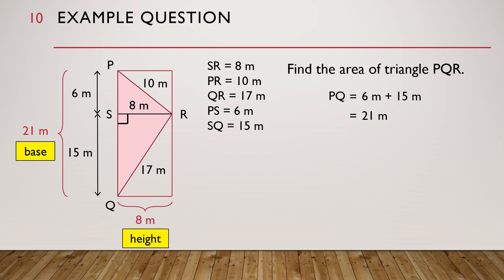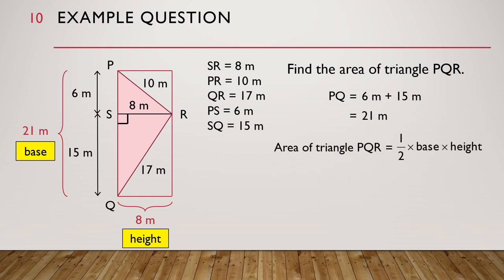So the area of triangle PQR is equal to half times base times height, which is equal to half times 21 meters times 8 meters, and we get 84 square meters.